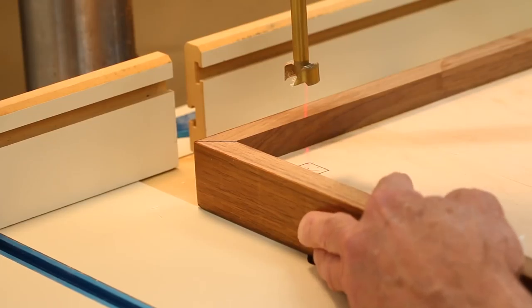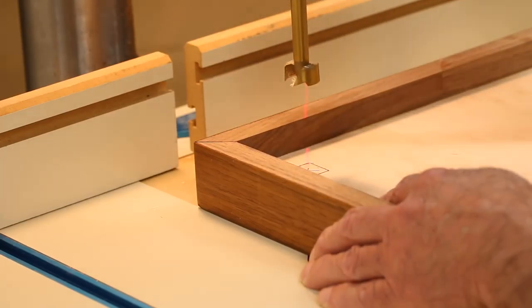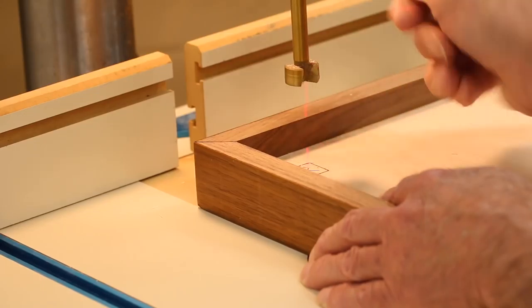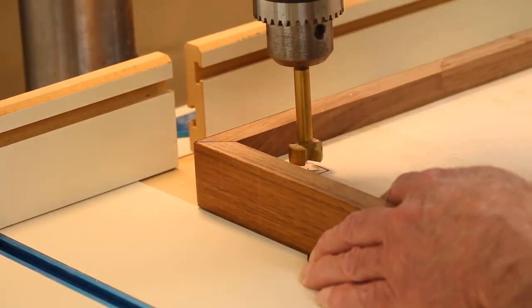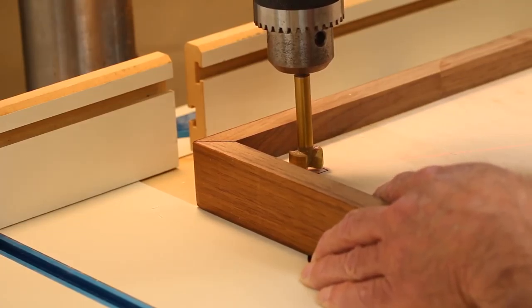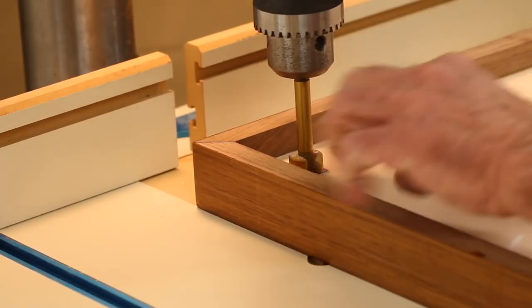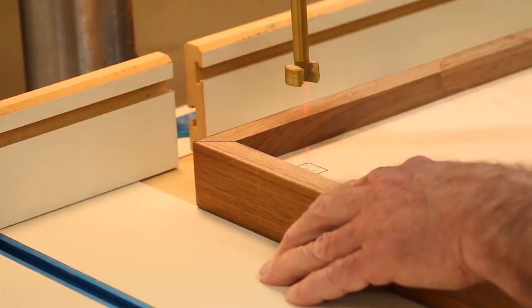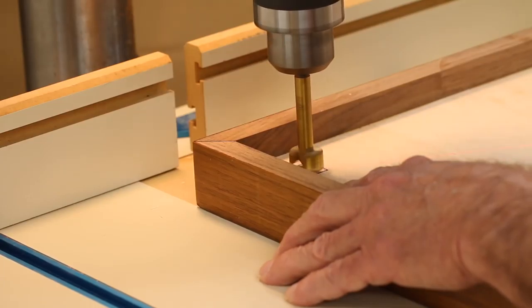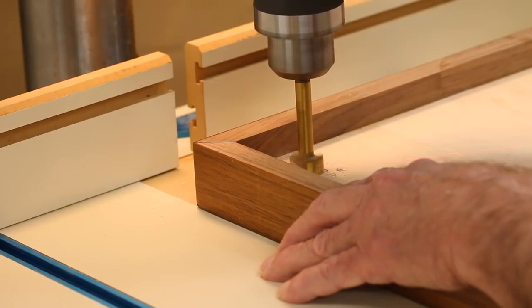When you're starting a Forstner bit, there is a point on that bit that sticks out below the level of the cutters just a tiny bit. If you go ahead and get that point lined up right on that X and then just press it in without the bit turning, then when you turn on the bit and start to drive it in, that little divot will guide your bit and get it centered for you just perfectly.